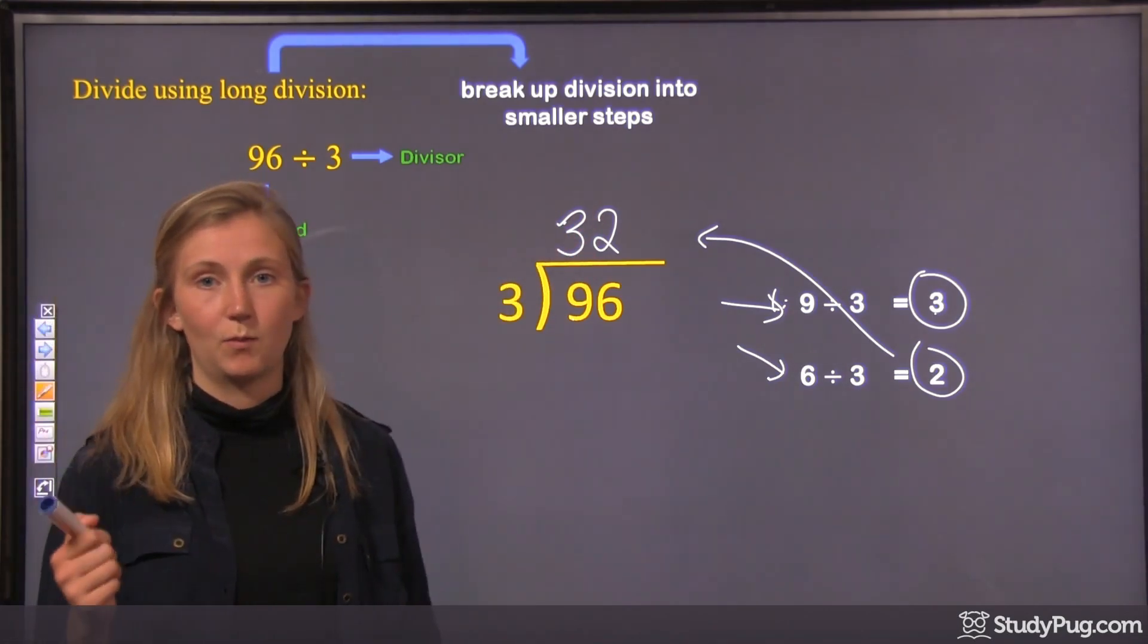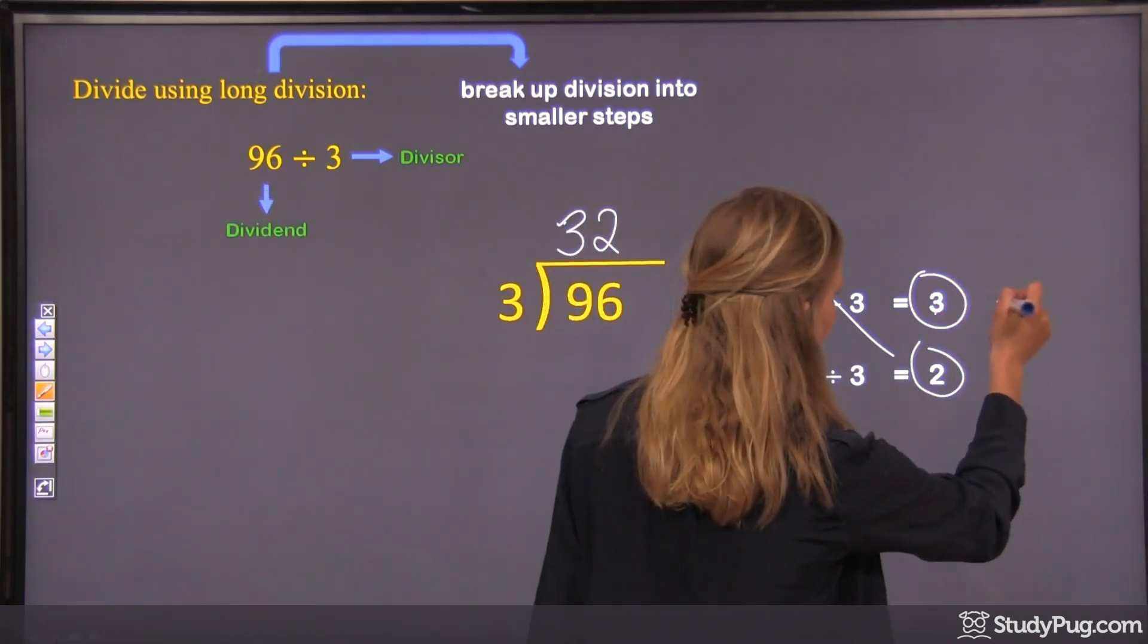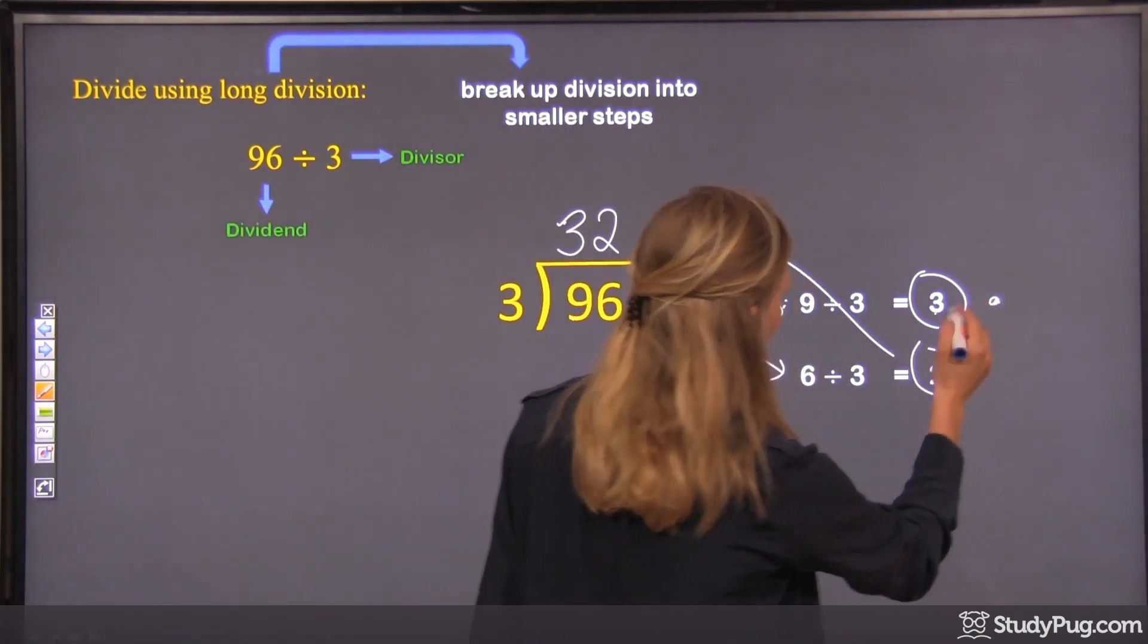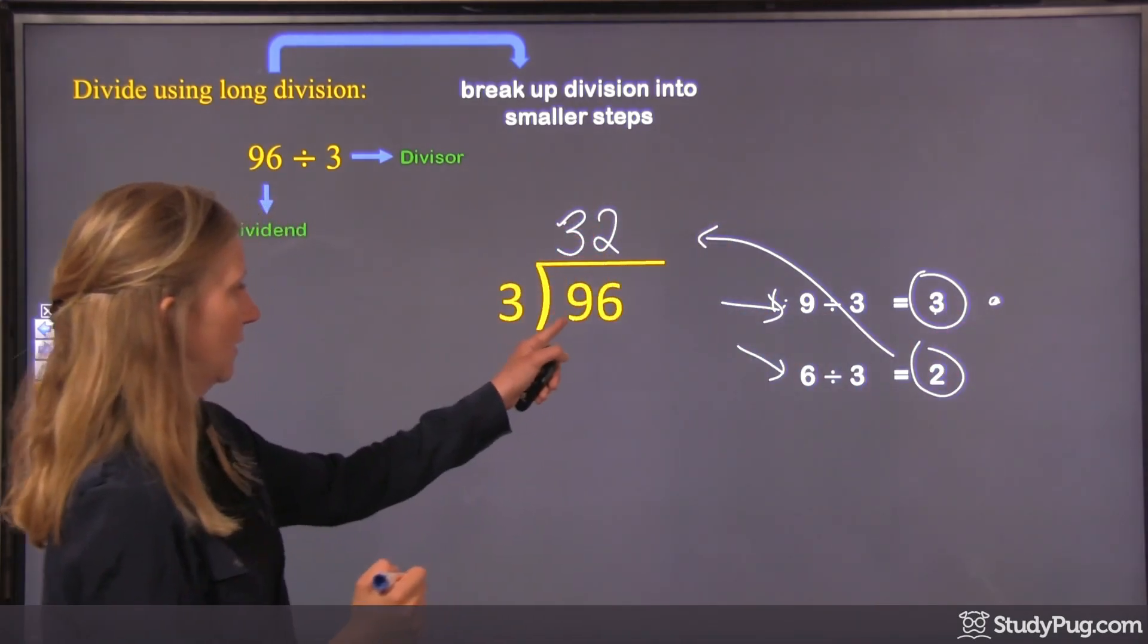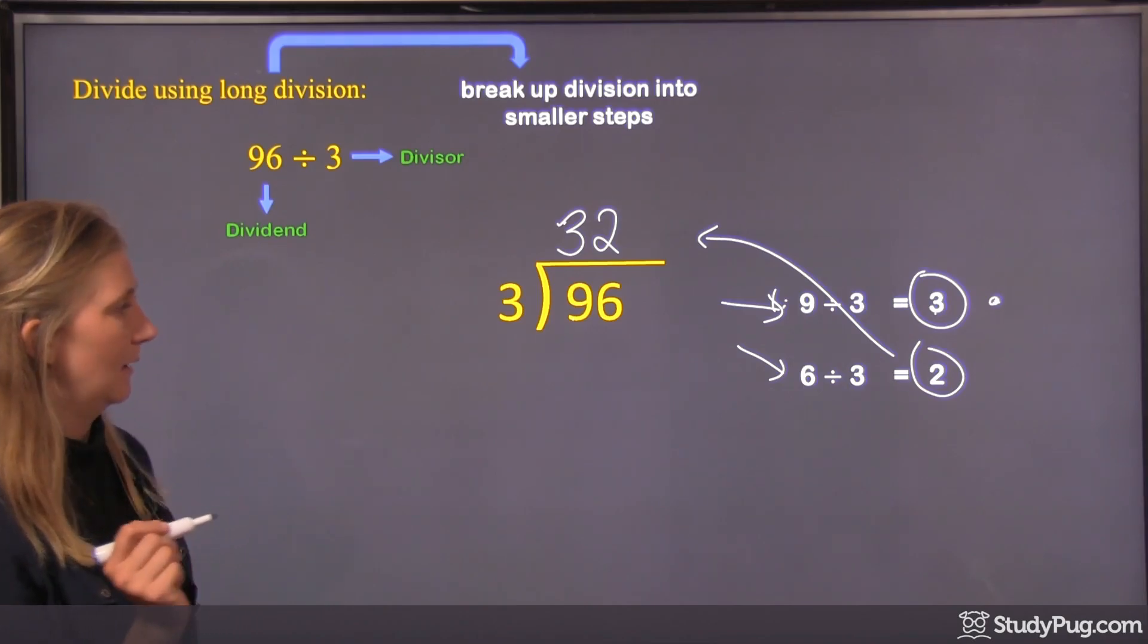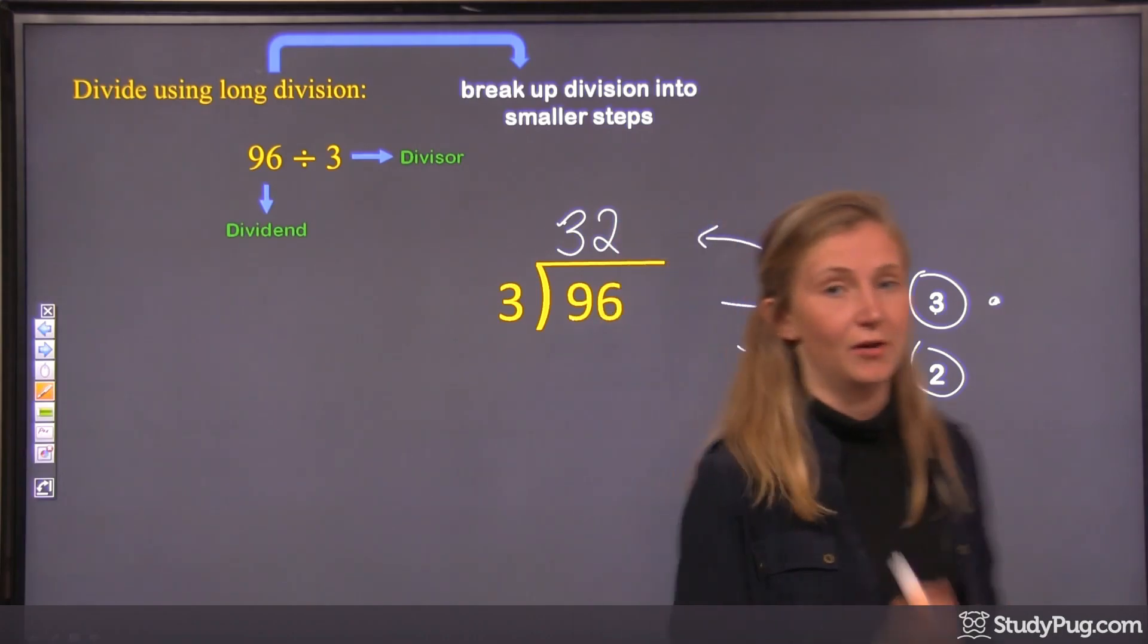All right? And then our quotient goes there on top. But remember what the important part is? Make sure that in your little division steps, you've got a quotient, and you put it right on top of the dividend of that division step. All right? So 96 divided by 3 is 32.